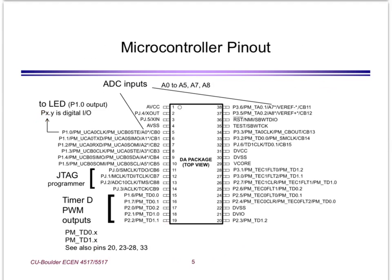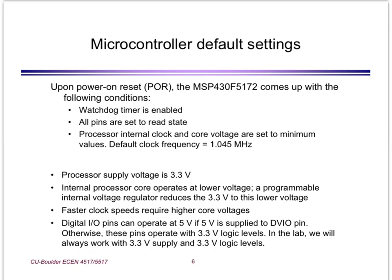Here is the pinout of the chip for reference. You will notice that many pins have multi-purpose functions; for example, pin 19 can be used as a general IO pin called P2.2 — that is port 2, pin 2 of port 2 — and it also can be used as the output TD1.1 out of Timer D. In the default settings, the microcontroller comes up in a low-power mode clocked at just 1MHz, but we will talk about how that can be stepped up to high-frequency operation.